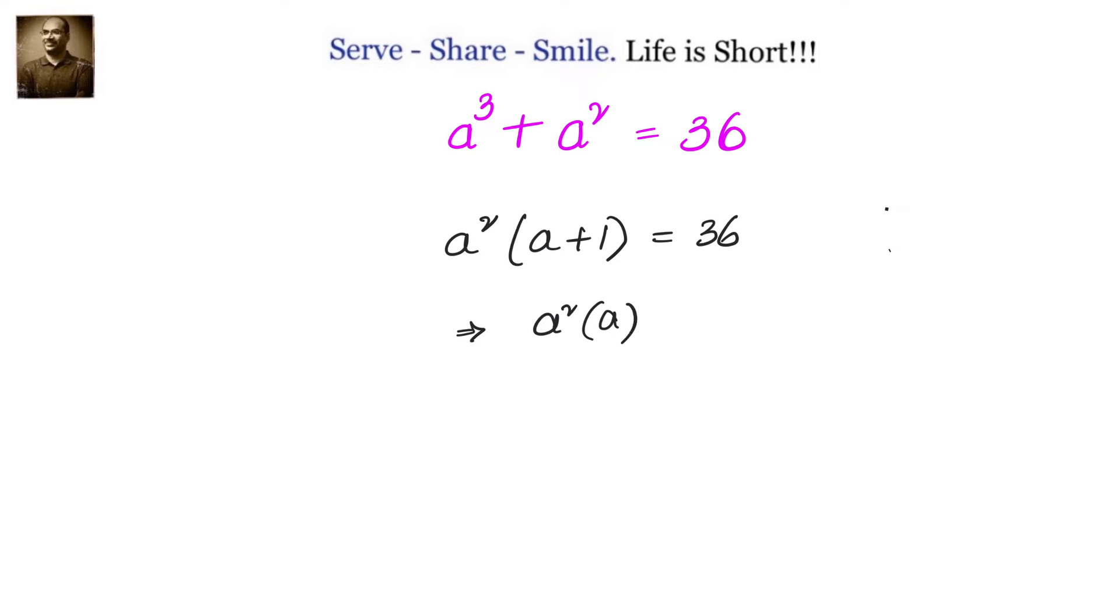First, let us understand how we can factor A³ + A². We can write it as A²(A + 1) = 36, which gives us an idea that A³ should be less than 36.